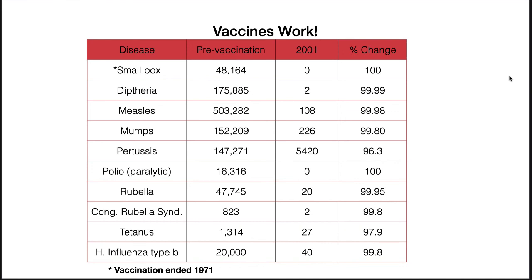Here is a table showing pre-vaccination rates and the results after vaccines became available. For smallpox, there were 48,164 cases per year; in 2001 there were none. For measles, there were 503,282 cases per year; in 2001 there were only 108. You can see there are gigantic reductions in the incidence of these diseases. Vaccines work.